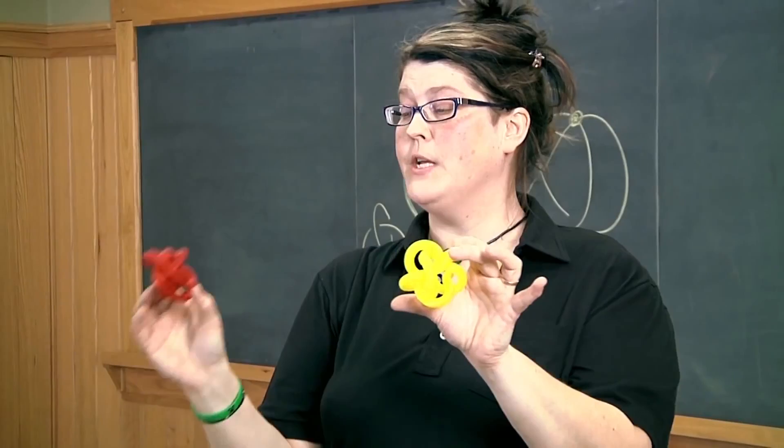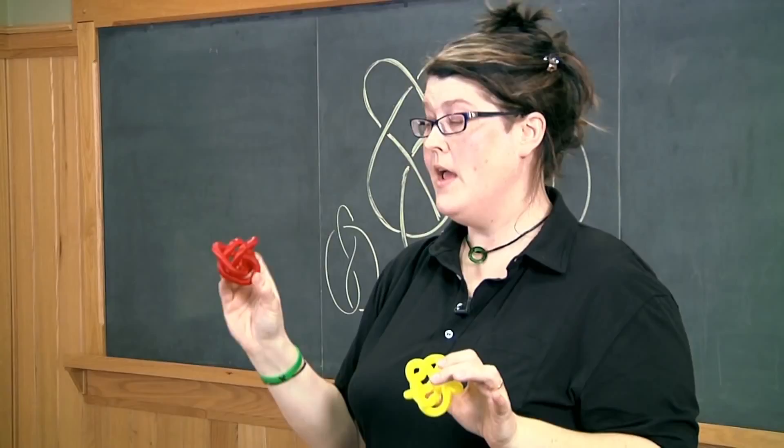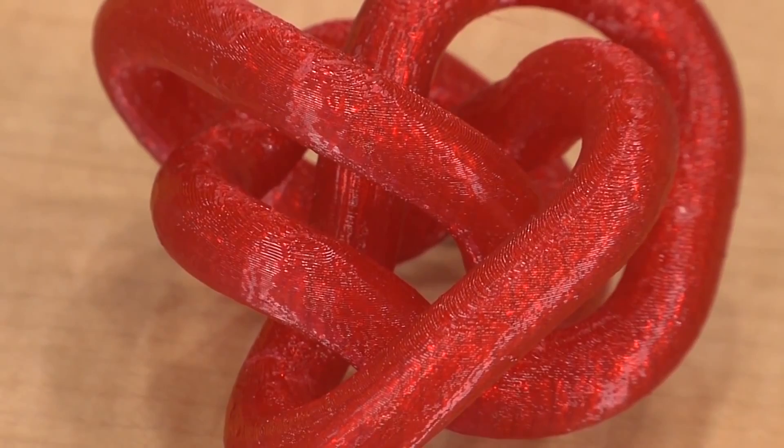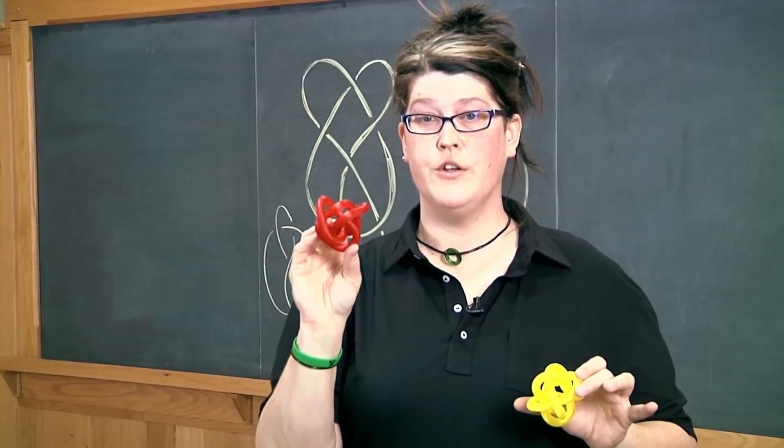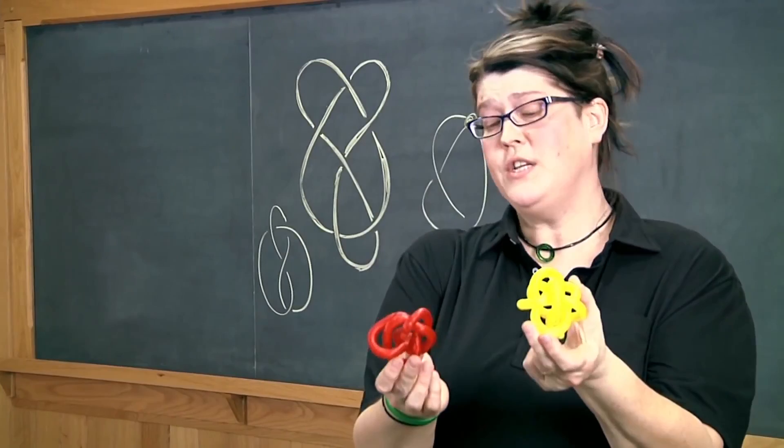And this red knot has a very special property. Its property is this. No matter how I draw it on the board, I will never ever be able to draw it so that the strands go over, under, over, under, over, under, like they do in all the pictures that are on the board here. You can't do it. You can draw it on the board, but it wouldn't be alternating. This is the first non-alternating knot. This is the knot right before it in the table. It is alternating.